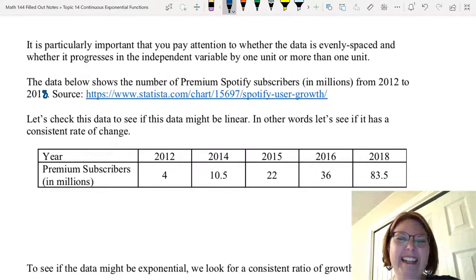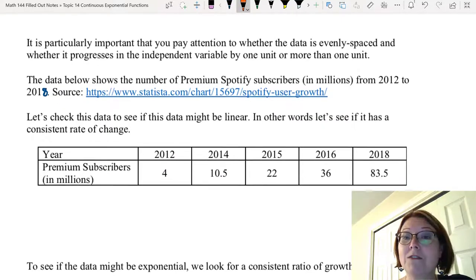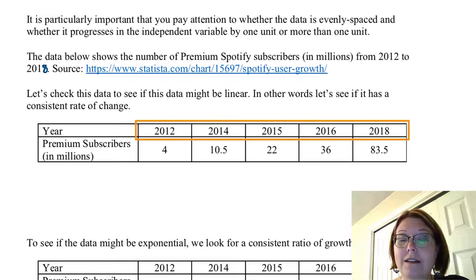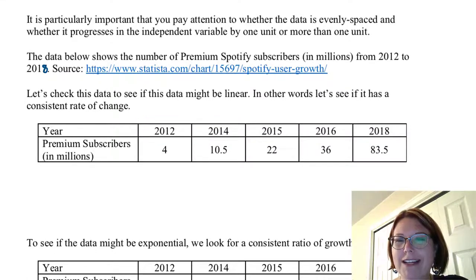Now, especially because I just warned you, we probably ought to check to see whether the data is evenly spaced. We have two rows in our data. The top row is the year and the bottom row is the premium subscribers in millions. The top row has data 2012, 2014, 2015, 2016, and 2018. We're counting by even years except for that middle year, that 2015.